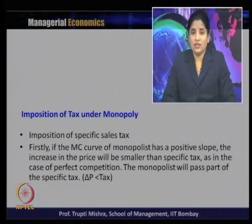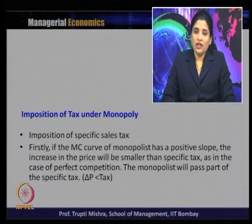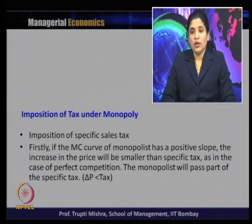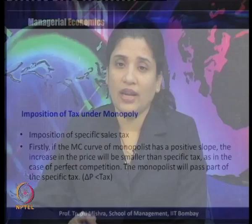The third category of tax is imposition of a specific sales tax. If the marginal cost curve of the monopolist has a positive slope, the increase in price will be smaller than the specific tax — as in the case of perfect competition — but the monopolist will pass only part of the specific tax. The effect of tax depends on the shape of the marginal cost curve. If the MC curve is upward sloping, the price increase will be smaller than the specific tax, and only part of it is transferred to the buyer.